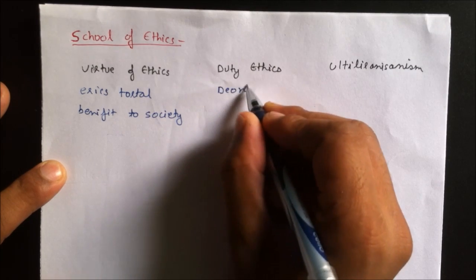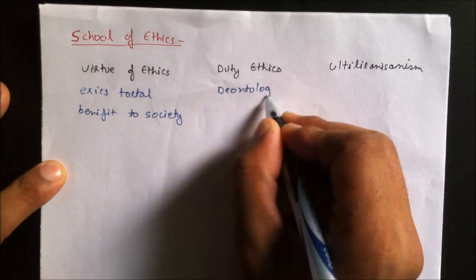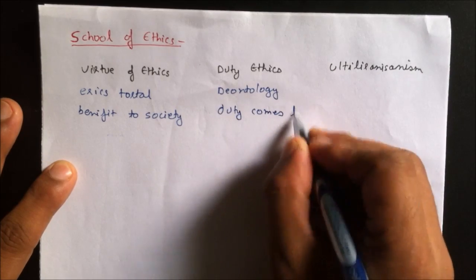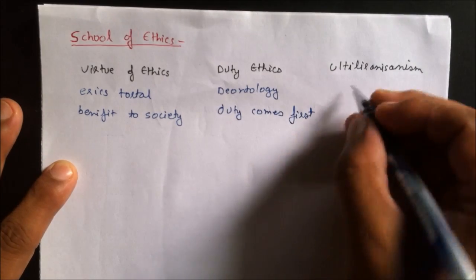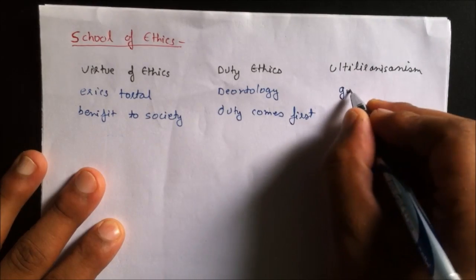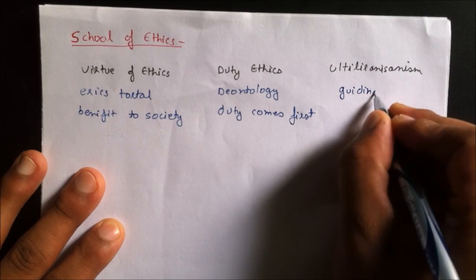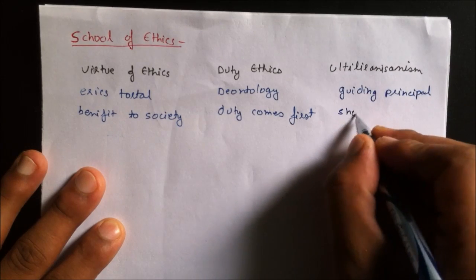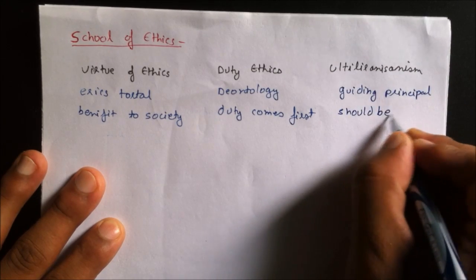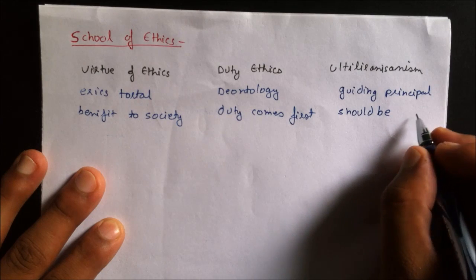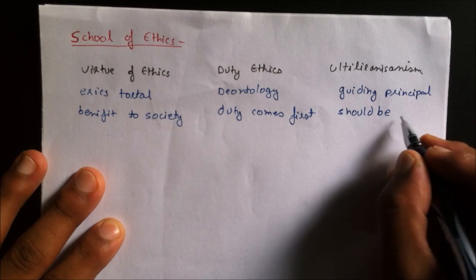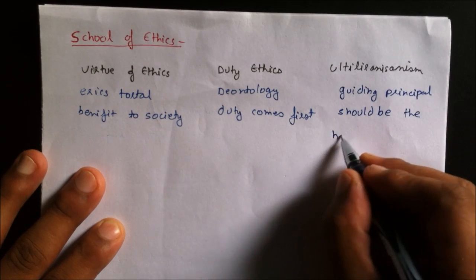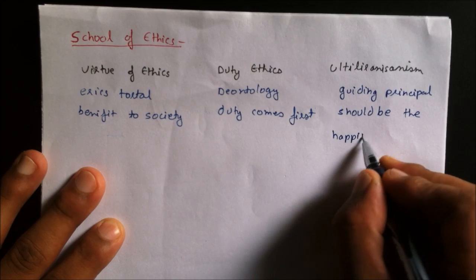The second school is Duty Ethics, also known as Deontology. It says that duty always comes to us. The third one is Utilitarianism. The guiding principle of this school is that decisions should be made for the happiness of the people — the more the people are happy, the more ethical you are.